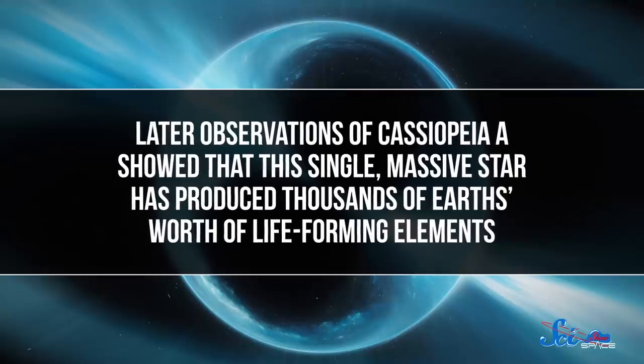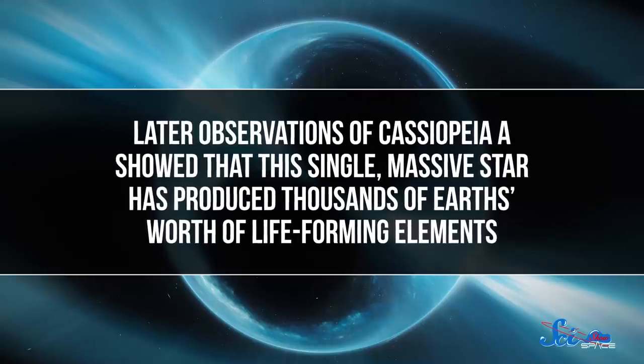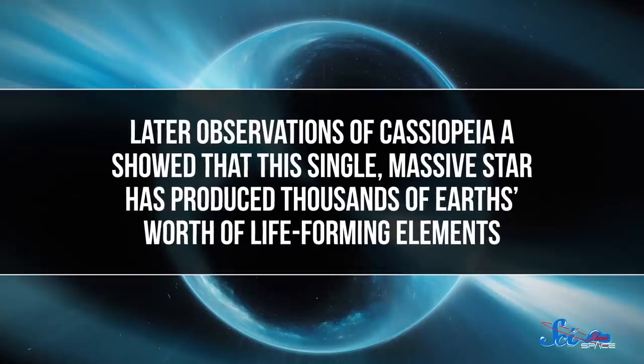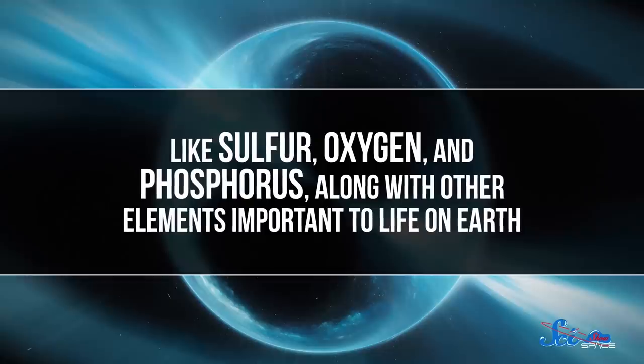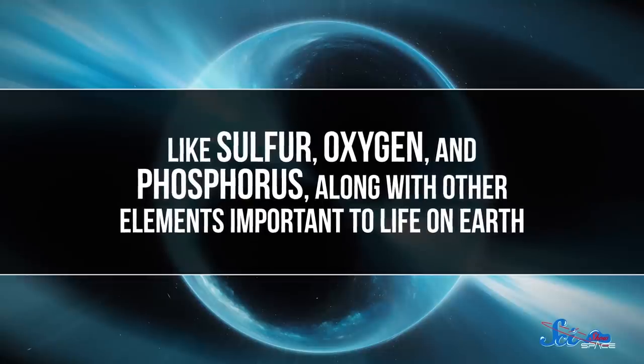Just how that happens is still an open question, but answering it will help us understand what drives supernovas, and how exactly the elements produced in the supernova, both before and during the explosion, spread through space. After all, supernovas play a huge role in getting complex elements out into the universe and seeding new stars and planets. In fact, later observations of Cassiopeia A showed that this single massive star has produced thousands of Earth's worth of life-forming elements, like sulfur, oxygen, and phosphorus, along with other elements important to life on Earth.